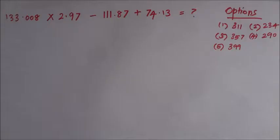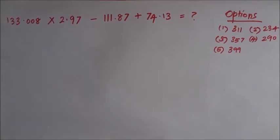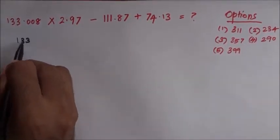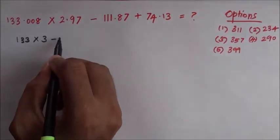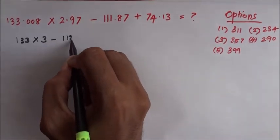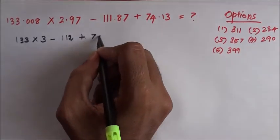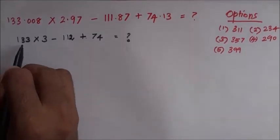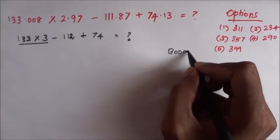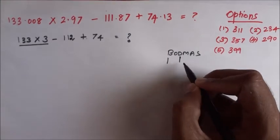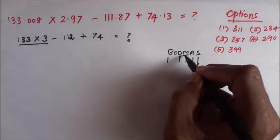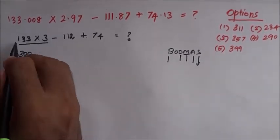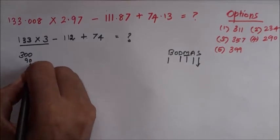The next question is simplification. The next simplification is the approximation. The number is the first approximate: 133.008 times 2.97. It's not the number. Now the number is 3.008 and 134.008. Addition subtraction. Now if you add this, we want to add this.